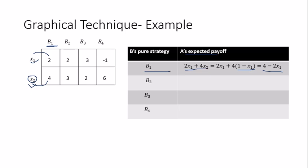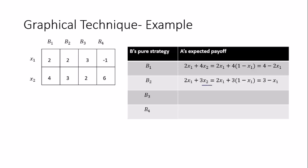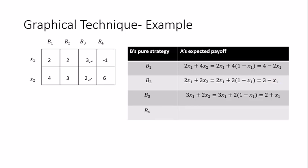For b2, the expected payoff is 2x1 + 3x2 = 3 − x1. For b3 it is 3x1 + 2x2 = 2 + x1. For b4 it is −x1 + 6x2 = 6 − 7x1. We now have four linear expressions in x1, each representing a straight line in the graph.